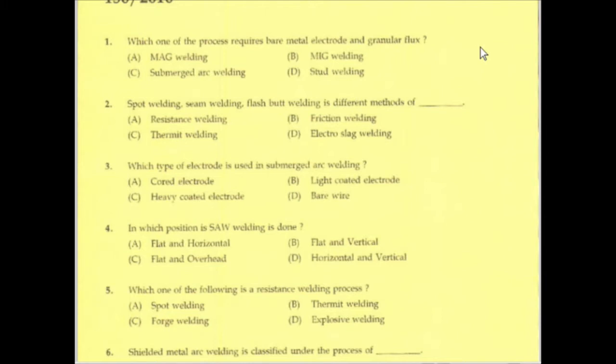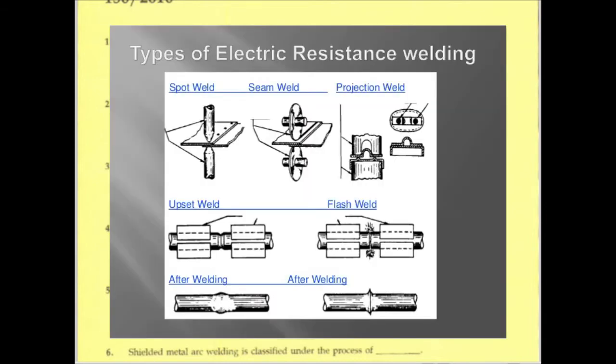Spot welding, seam welding, and flash butt welding are different methods. These welding methods — spot welding, seam welding, and flash butt welding — are in the category of resistance welding.